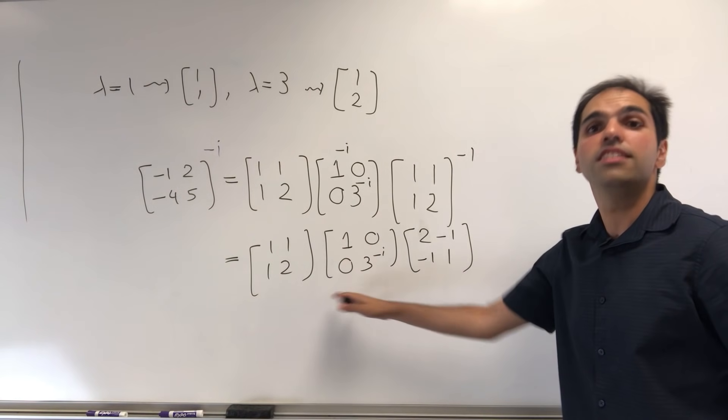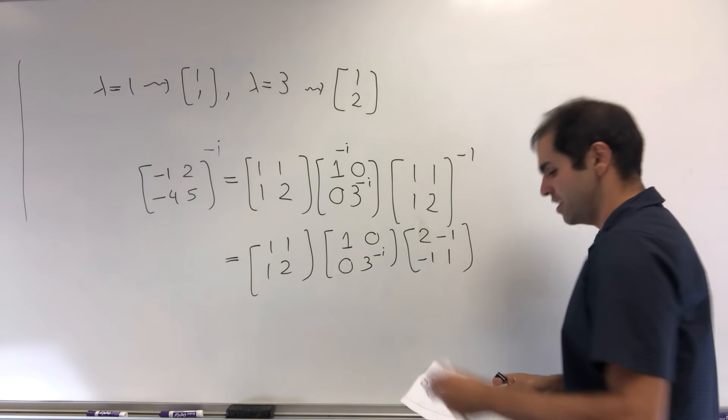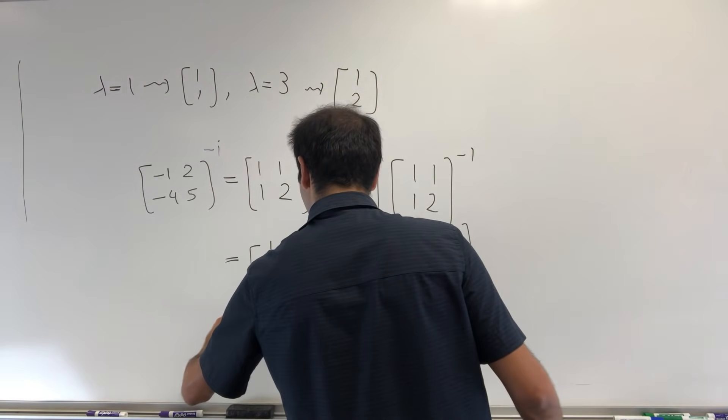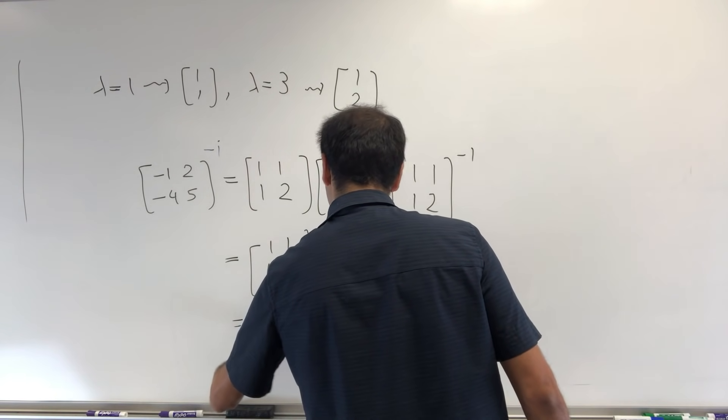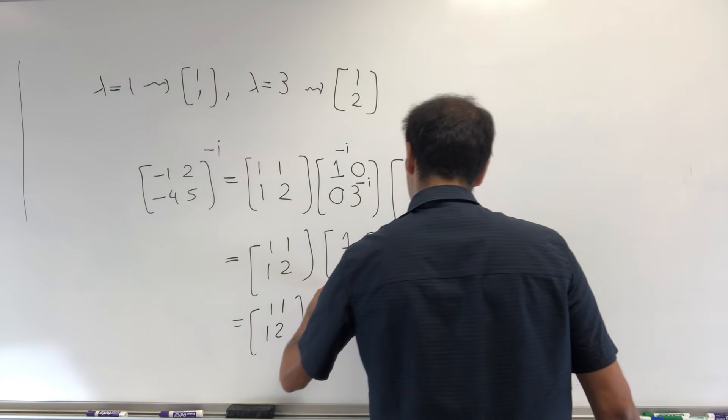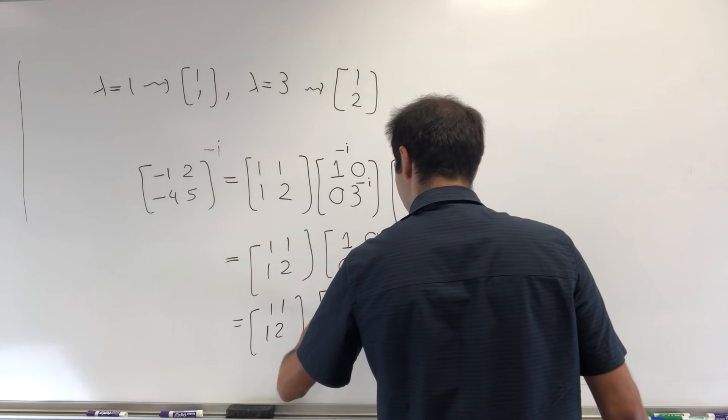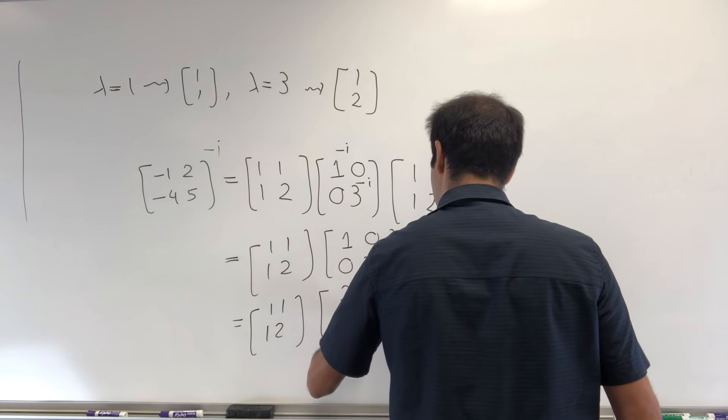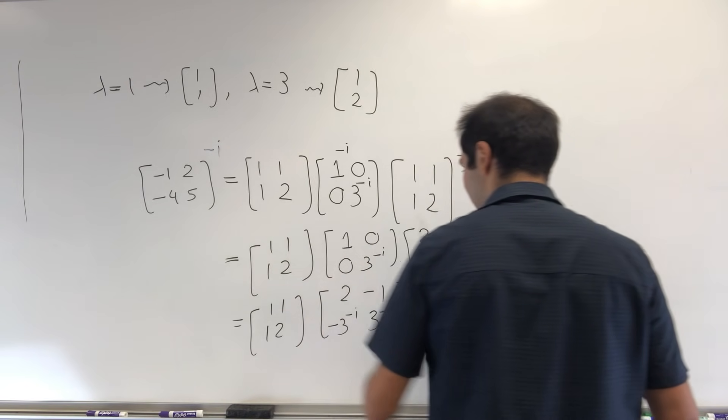So our answer, strictly speaking, is this. So let's expand that out. So this becomes [1, 1; 1, 2] times [2 - 3^(-i), -1 + 3^(-i); -3^(-i), 3^(-i)].